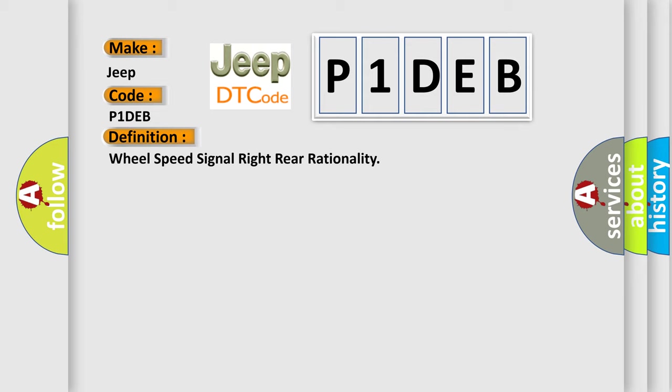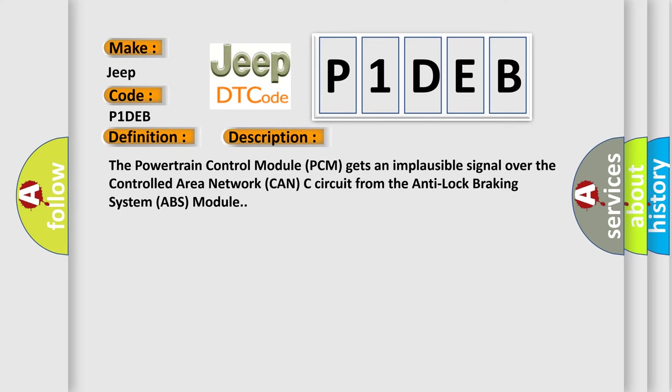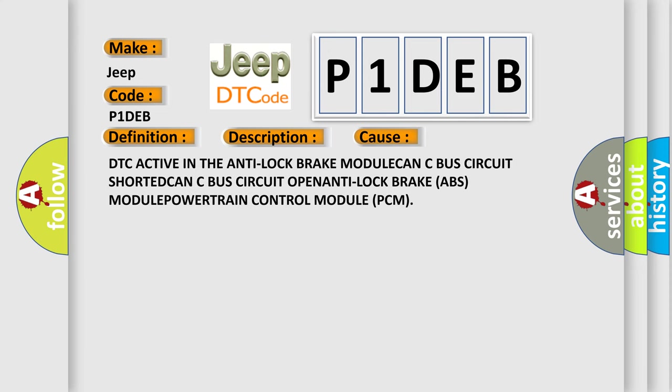Here is a short description of this DTC code. The powertrain control module (PCM) gets an implausible signal over the controlled area network CAN-C circuit from the anti-lock braking system (ABS) module. This diagnostic error occurs most often in these cases: DTC active in the ABS module, CAN-C bus circuit shorted, CAN-C bus circuit open, ABS module fault, or powertrain control module (PCM) fault.